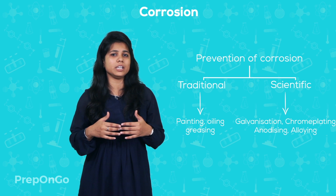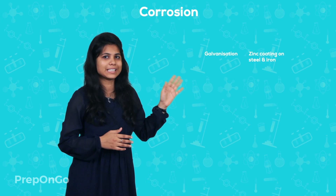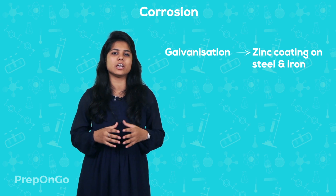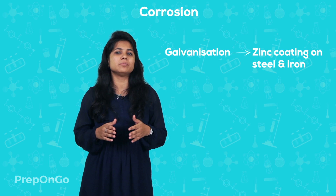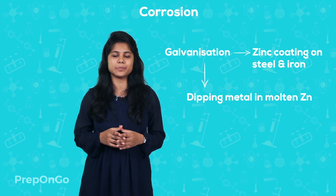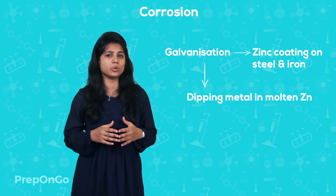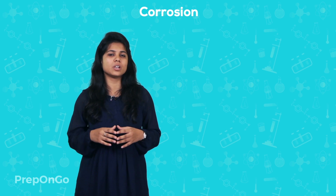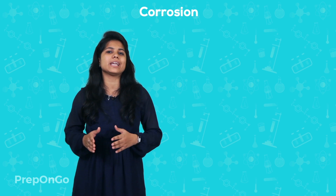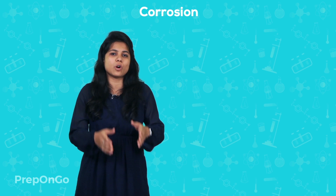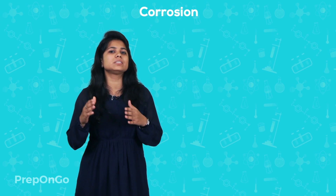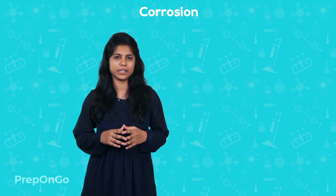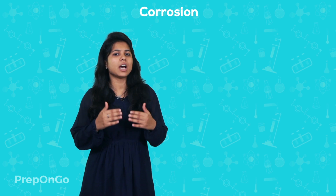The first technique is galvanization, which is a method of protecting steel and iron from rusting by coating them with a thin layer of zinc. This is done by dipping the metal into a bath of zinc. Even if the zinc layer is broken, the iron or steel does not get rusted. This is because zinc is more reactive than iron and reacts with oxygen to form an oxide layer, which prevents the iron from getting corroded by breaking the supply of oxygen to it.